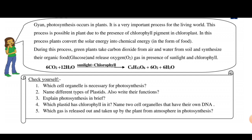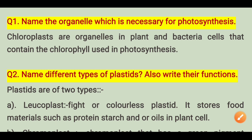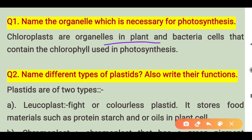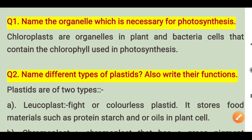Now we will move on to the questions. We will discuss a total of 5 questions from worksheet 26. Question number 1: name the organelle which is necessary for photosynthesis. Chloroplasts are the organelles in plant and bacteria cells that contain chlorophyll, which is used in photosynthesis. Chlorophyll is the green pigment that is compulsory for photosynthesis.